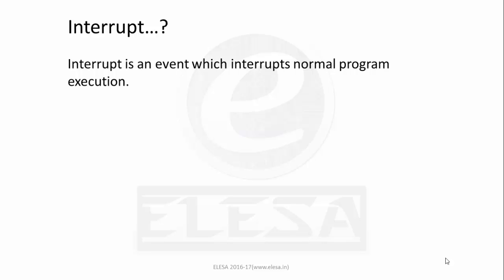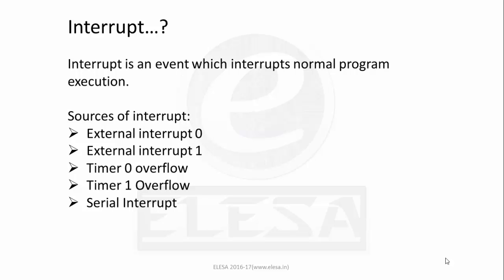If I ask how many interrupt sources are available in the 8051, there are 5 sources: external interrupt 0, external interrupt 1, timer 0 overflow, timer 1 overflow, and serial interrupt. External interrupt 0 and external interrupt 1 are hardware-controlled interrupts, while timer 0 overflow, timer 1 overflow, and serial interrupt are software interrupts which are controlled through programming.